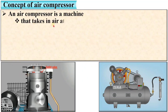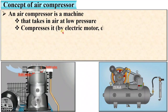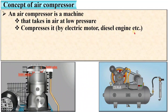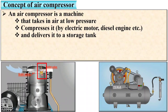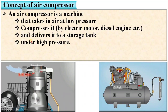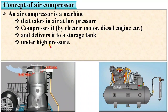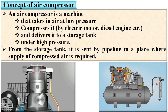An air compressor is a machine that takes in air at low pressure. It compresses it by electric motor, diesel engine, etc., and delivers it to a storage tank under high pressure. Very simply, an air compressor is used to increase the pressure of air from low pressure to high pressure. From the storage tank, compressed air is sent by pipeline to a place where supply of compressed air is required.